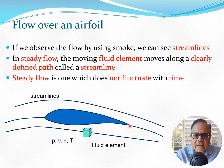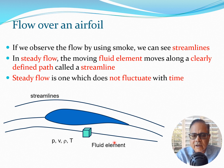Now we have seen that when we put an airfoil section in a flow, we get a flow pattern which is known as streamlines. For example, if we were to put this airfoil in a smoke-filled chamber and blow air on top of it, the smoke should follow some lines like this, and this has been experimentally observed for a long time. These lines of flow, where the fluid takes a particular path, are known as streamlines.